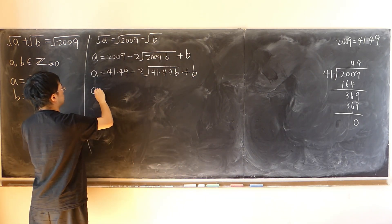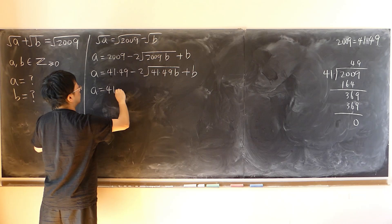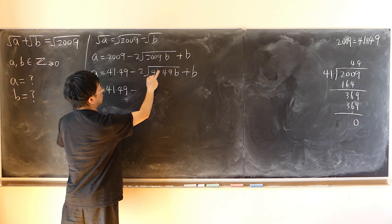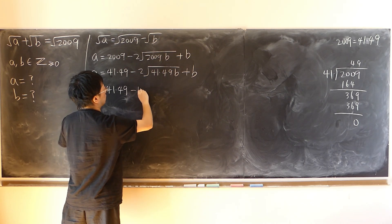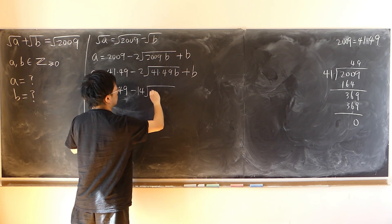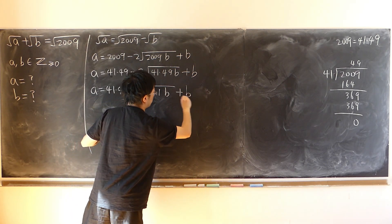And in fact 49 square root is just 7. So we just take that out. 7 times 2, 14, still have square root of 41 times b plus b.